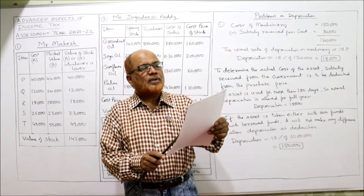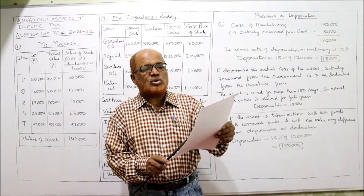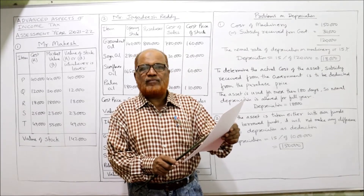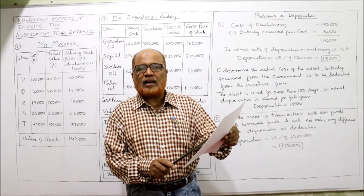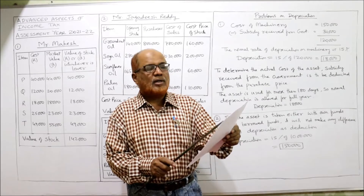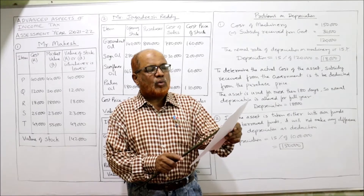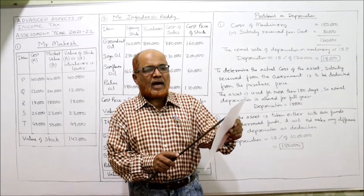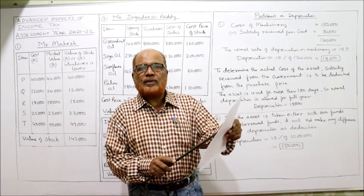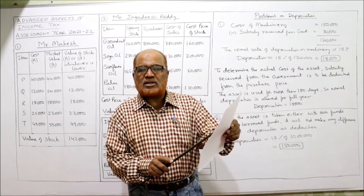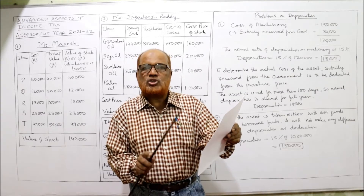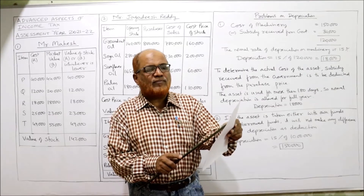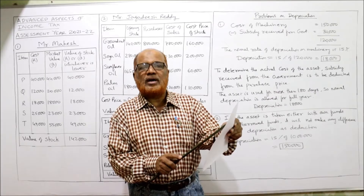See the first problem. Mr. Mahesh is in the business of purchase and sale of products. Compute the value of closing stock from the following information. Five items are given: P, Q, R, S, T. For each item, the cost price and market value are given. We compare cost price and market value — whichever is lower, that should be taken.